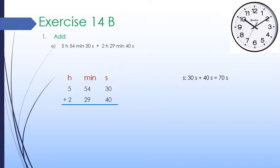30 plus 40 seconds equals 70 seconds. We can regroup 70 seconds: 60 seconds equals 1 minute, so 70 seconds equals 1 minute 10 seconds. Divide 70 by 60 to get 1 minute 10 seconds. We write 10 seconds under the second column and carry 1 minute to the minute column.